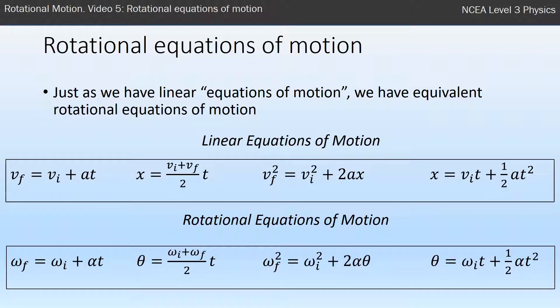Back in level two, we first met the linear equations of motion. These were equations to deal with objects that were accelerating at a uniform acceleration, and there are multiple equations here because each equation is missing one variable.